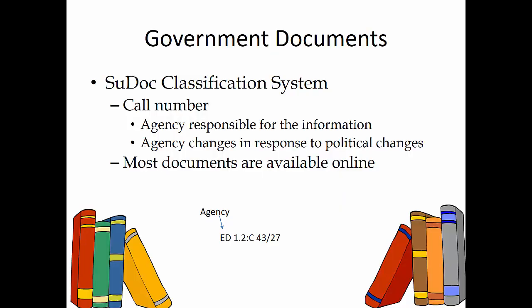The United States government is the largest producer of information in the world, and most libraries have government documents in their collection. The SuDoc classification system was developed by the Superintendent of Documents at the Government Printing Office, or GPO, for use with government materials. The SuDoc system assigns call numbers based on the agency responsible for the information, although these agencies change names occasionally, and therefore their call number would change. Many libraries also act as depositories for state and federal government and maintain documents for public access. However, many government agencies have decreased the amount of material printed and simply publish their reports and materials as online documents, available to everyone.